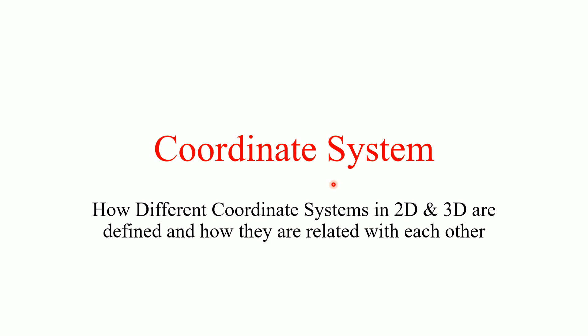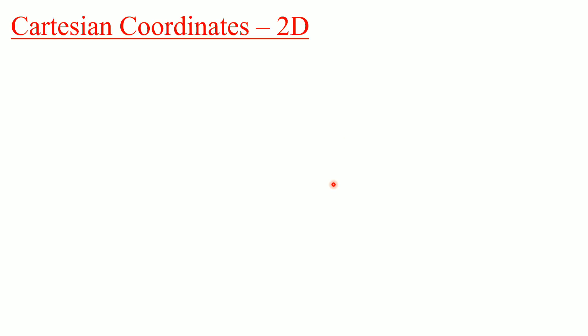In this video we will see how different coordinate systems in 2D and 3D are defined and how they are related with each other. First we will start with Cartesian coordinates in two-dimensional space.